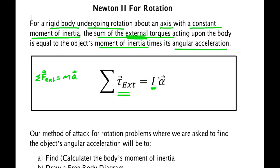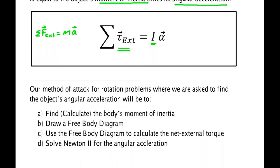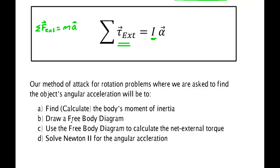Our method of attack is straightforward. We need to find I — we may have to calculate that using the methods discussed in the previous video. We need to draw a free body diagram. Some things we talked about earlier in the semester become important now: making sure you break down critical dimensions, and putting the force where it is applied, because if you change where the force is applied, you change its torque. We use the free body diagram to calculate torques, then solve Newton's second law to find the angular acceleration. If the angular acceleration is constant, we can use rotational kinematic equations to find angular velocity, angular position, and so forth.